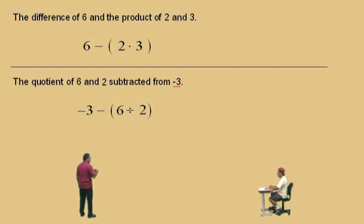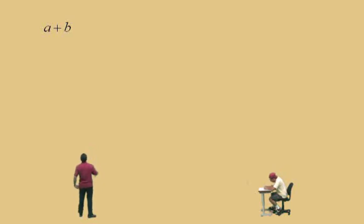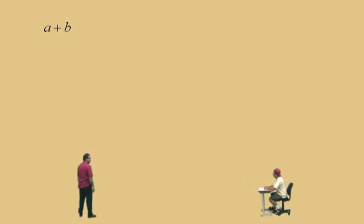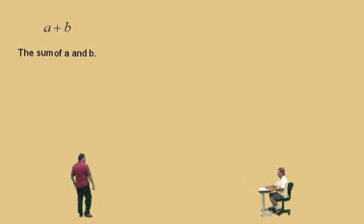We've finished translating word statements to math, so let's go the other way — let's translate math statements to word statements. A plus B: is this a sum, a quotient, a product, or a difference? Sum — it's the sum, right. It's the sum of what two things? A and B. There you go, that's it.